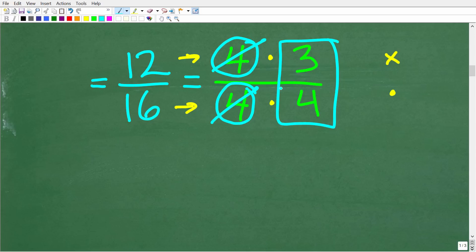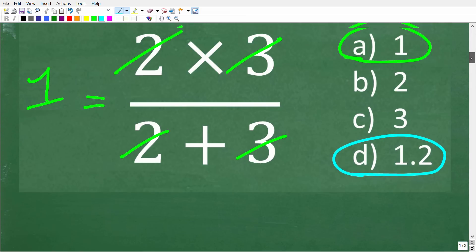So to reduce 12 over 16 you're really breaking up these numbers into its factors looking for like factors cross canceling them and what's left over is the reduced fraction. In this case it's 3 fourths.